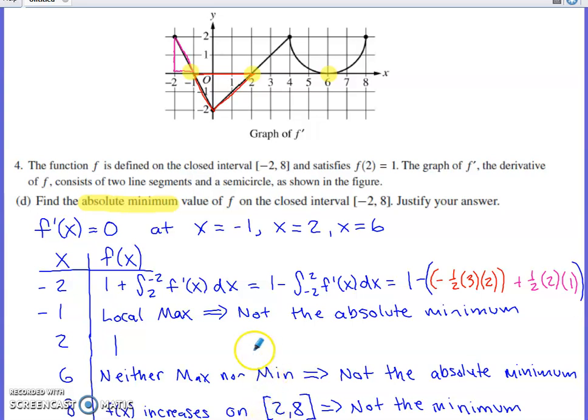So those I got out of the way right away. One more I got out of the way right away, and that was at negative 1. Also using the logic from the sign chart in part A, f prime goes from positive to negative at the x of negative 1. That's a local maximum. There's no way that a local maximum can be the location of an absolute minimum. So there's really only two locations left for us to analyze, the x value of 2 and the x value of negative 2.